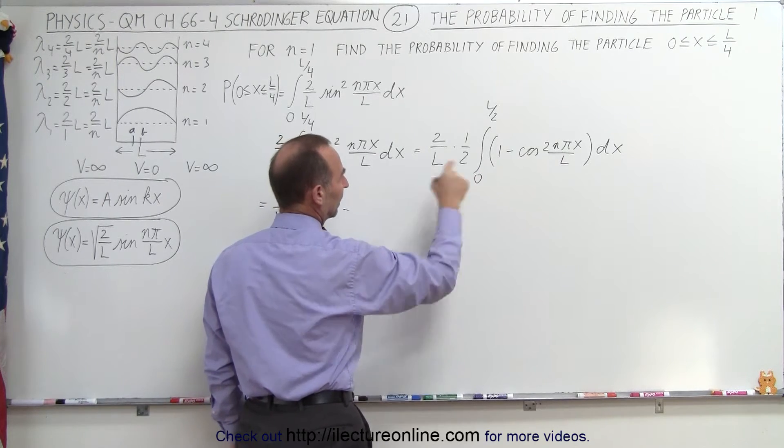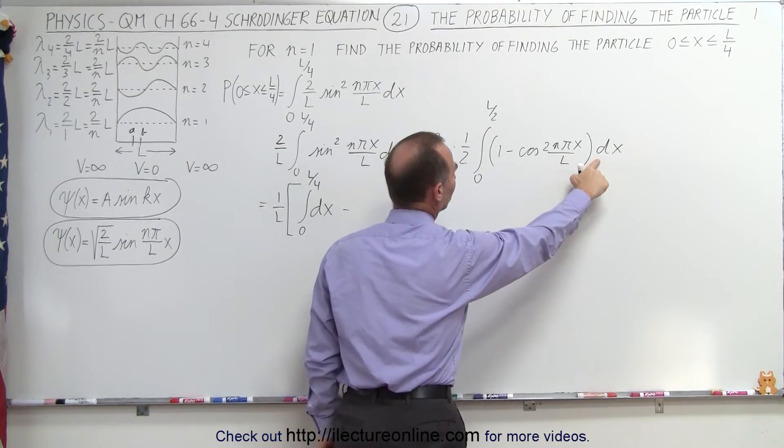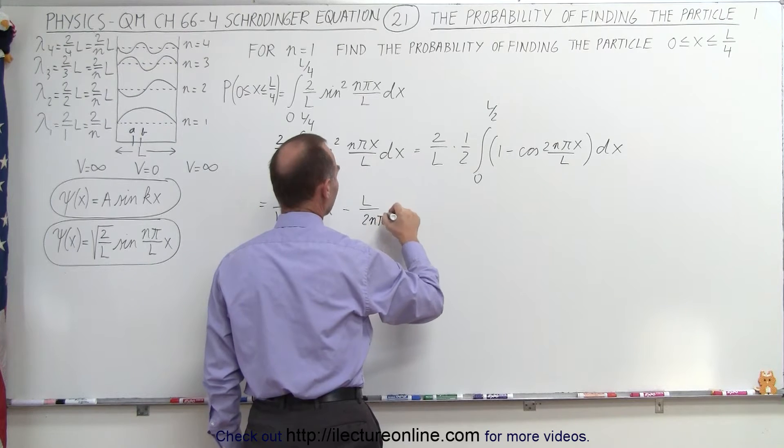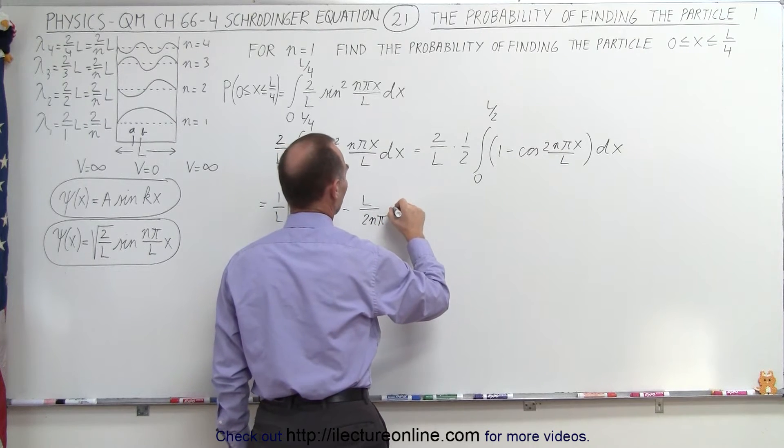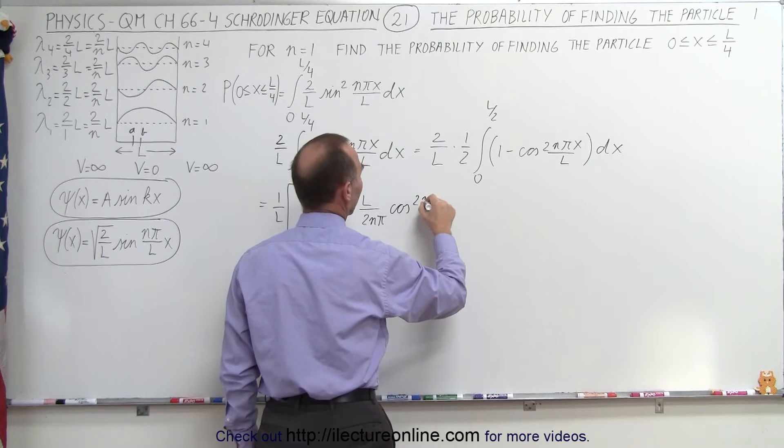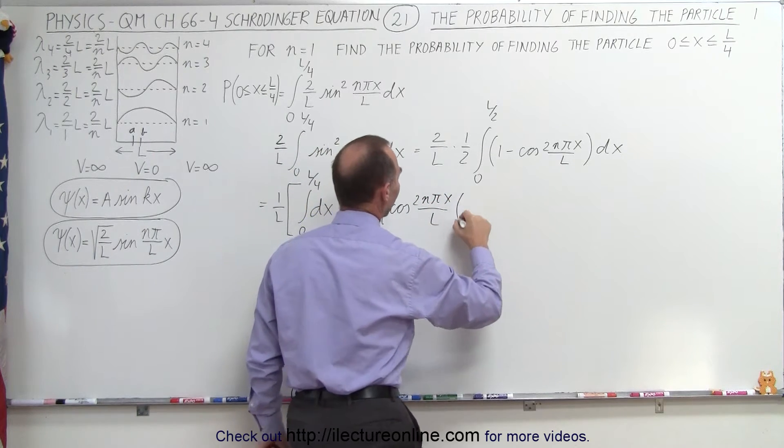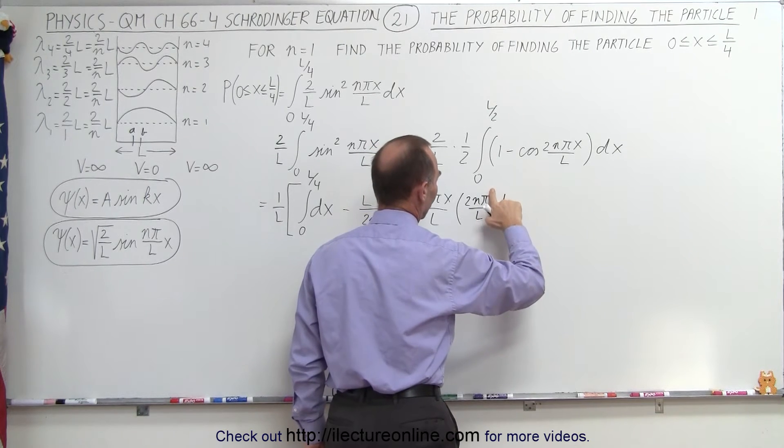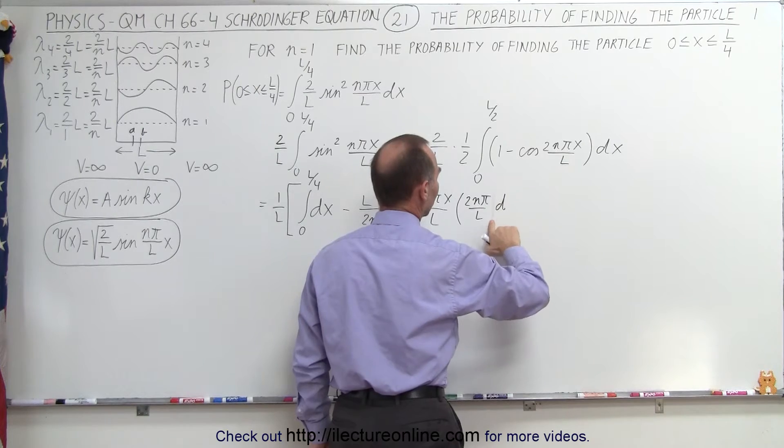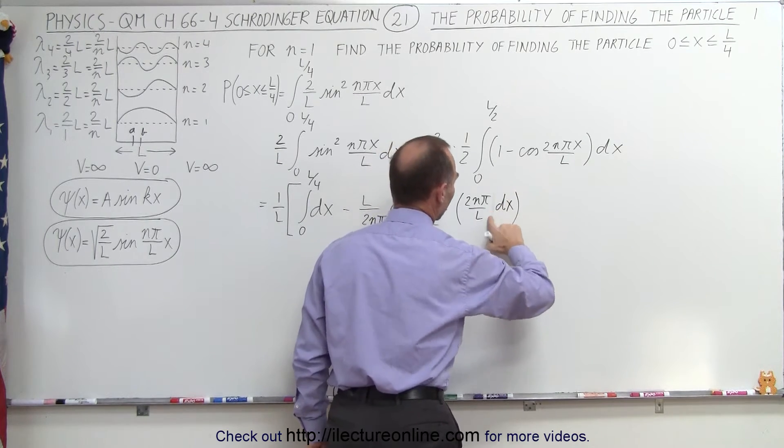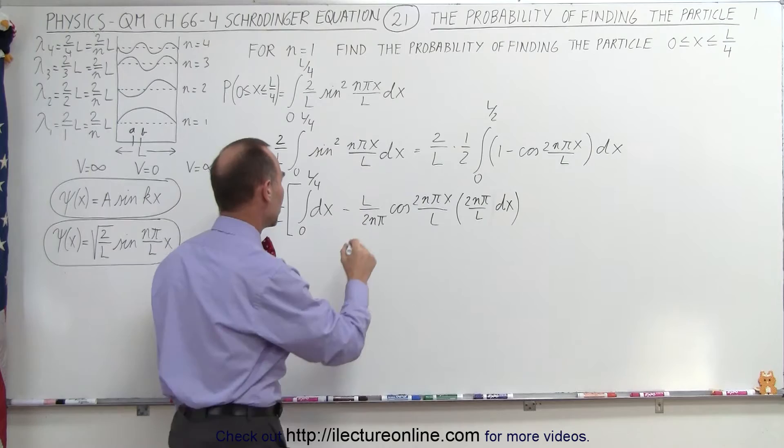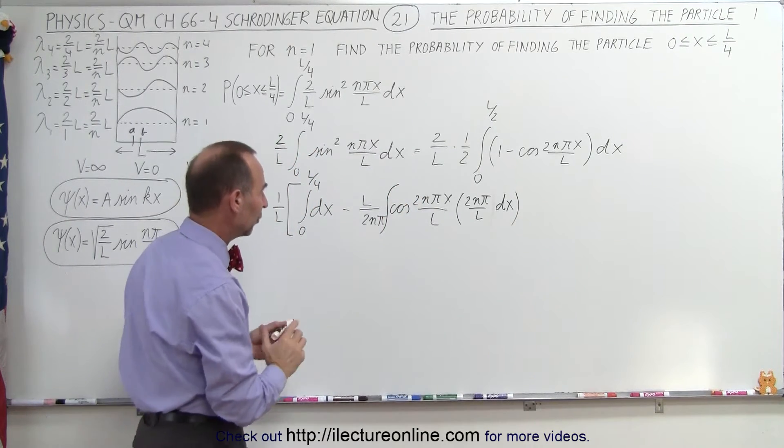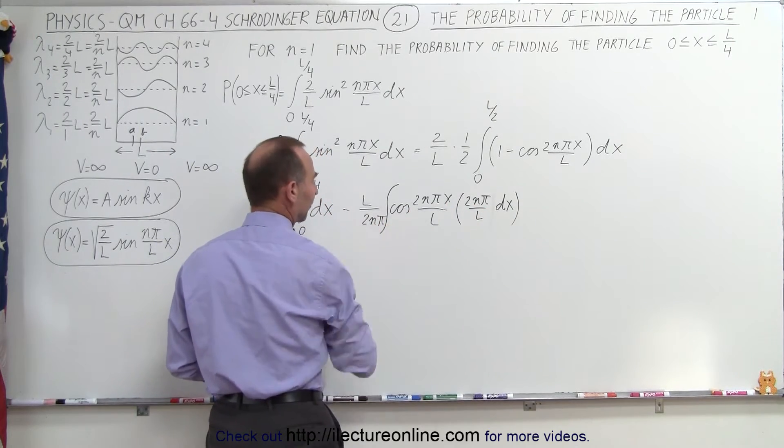Now to integrate that we're going to need a proper differential, which means we're going to need an L over 2 n pi times the cosine of 2 n pi x over L times the 2 n pi over L times dx, so you can see that that's the proper differential. There we go. So now we have the proper differential we want to integrate, so we'll go ahead and do that. And so by multiplying times this, we also have, of course, divide by that.